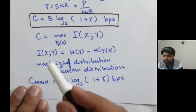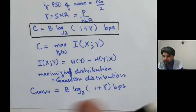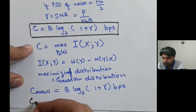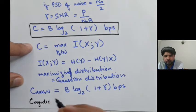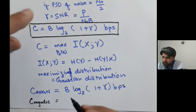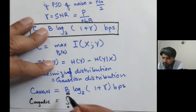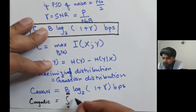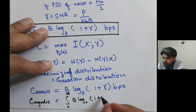C ergodic would be integral from zero to infinity, B log base 2 of 1 plus gamma.